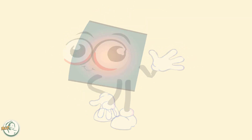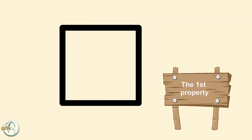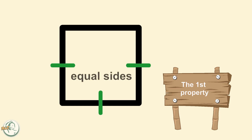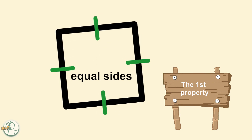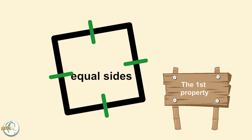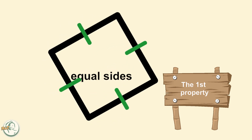Let's take a closer look at the properties of a square. The first property is that all four sides of a square are equal in length. This means that each side has the same measurement, making it a symmetrical shape.